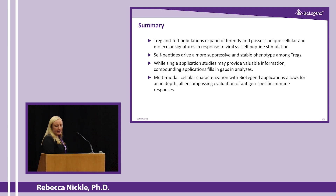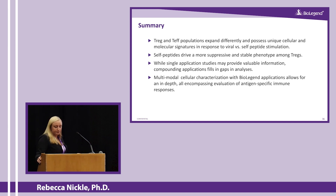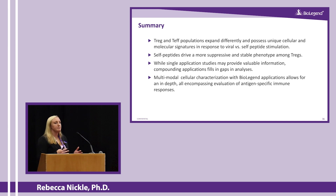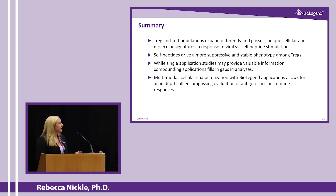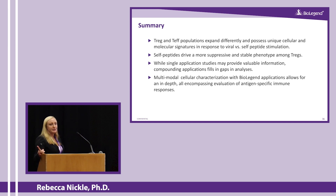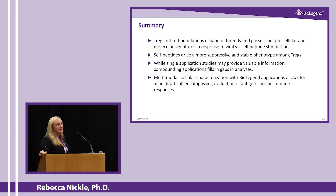In summary, we detected differential expansion of Treg and T-effector populations that was distinct given a viral versus self-peptide stimulation. Self-peptides drive a more suppressive and stable Treg phenotype. On a broader level, while single applications can provide very valuable information for your research, compounding those applications fills in the gaps in your analysis and gives you a more total picture of what is happening in those cultures. Altogether, multimodal cellular characterization with BioLegend applications allows for a more in-depth, all-encompassing evaluation of antigen-specific immune responses. I'd like to thank everyone at BioLegend who helped make this project possible, especially our strategic marketing team, proteogenomics, bioinformatics, molecular cell biology, and flow teams.